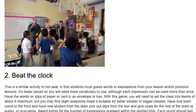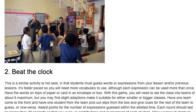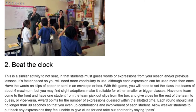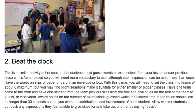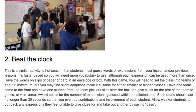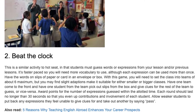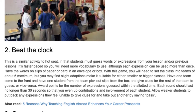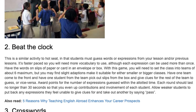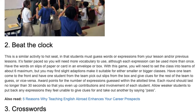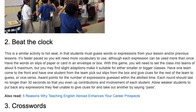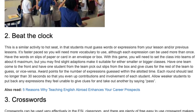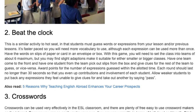With this game, you will need to set the class into teams of about six maximum, but you may find slight adaptations make it suitable for either smaller or bigger classes. Have one team come to the front and have one student from the team pick out slips from the box and give clues for the rest of the team to guess, or vice versa. Award points for the number of expressions guessed within the allotted time. Each round should last no longer than 30 seconds to even up contributions and involvement of each student. Allow weaker students to pass on any expressions they feel unable to give clues for.